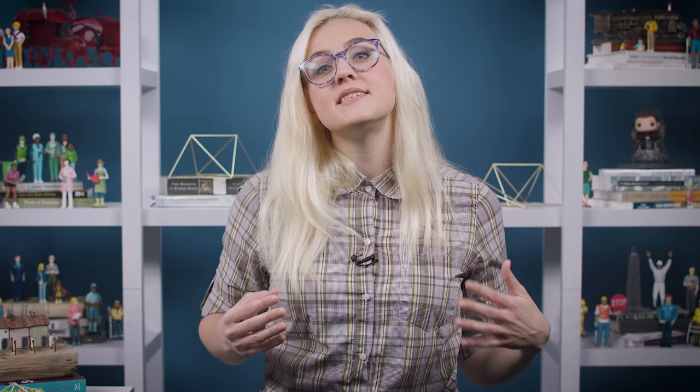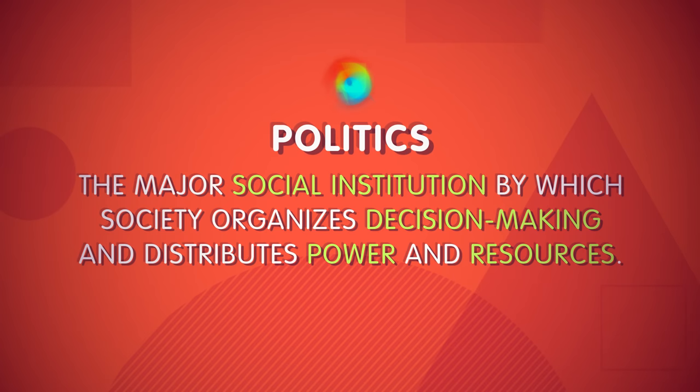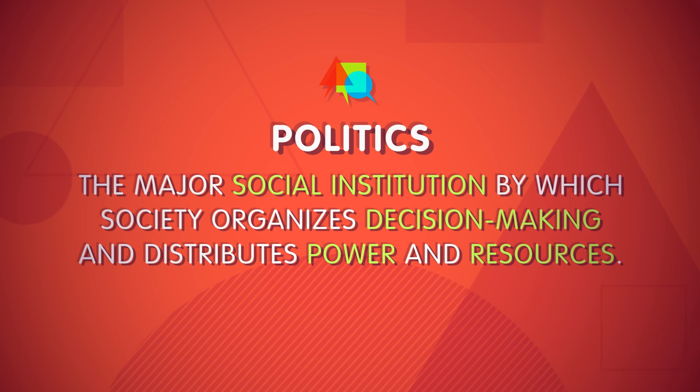What do we mean when we talk about politics? A civics class can define politics in terms of the particular systems of government, but sociologists have a broader definition. Politics is the major social institution by which society organizes decision-making and distributes power and resources. By this definition, politics obviously includes things like the government itself, but it also includes things outside of it, like political party organizations, and lobbying groups, and even social movements.